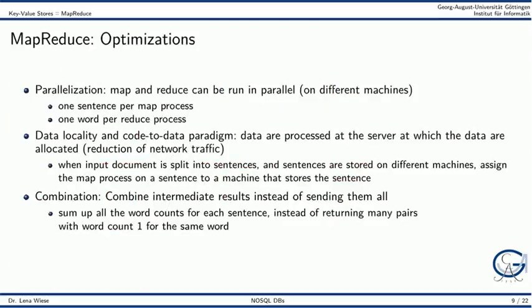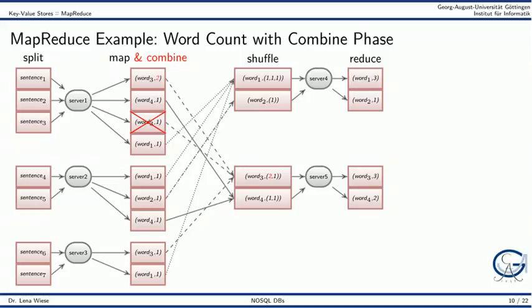MapReduce is optimized for parallel processing of data. As we have seen in our example, the map function can process one sentence independently of other servers. Similarly, the reduce process can process one word independently of other servers. MapReduce can also offer data locality via the code to data paradigm. Data are best processed where they are located and so we reduce any delays due to network traffic. Lastly, we can combine intermediate results instead of sending them all. That is, after a map process, we sum up all the one bits for each word. Here we see an example of the map and combine phase. The two occurrences of word 3 are merged into one key value pair as an intermediate result.